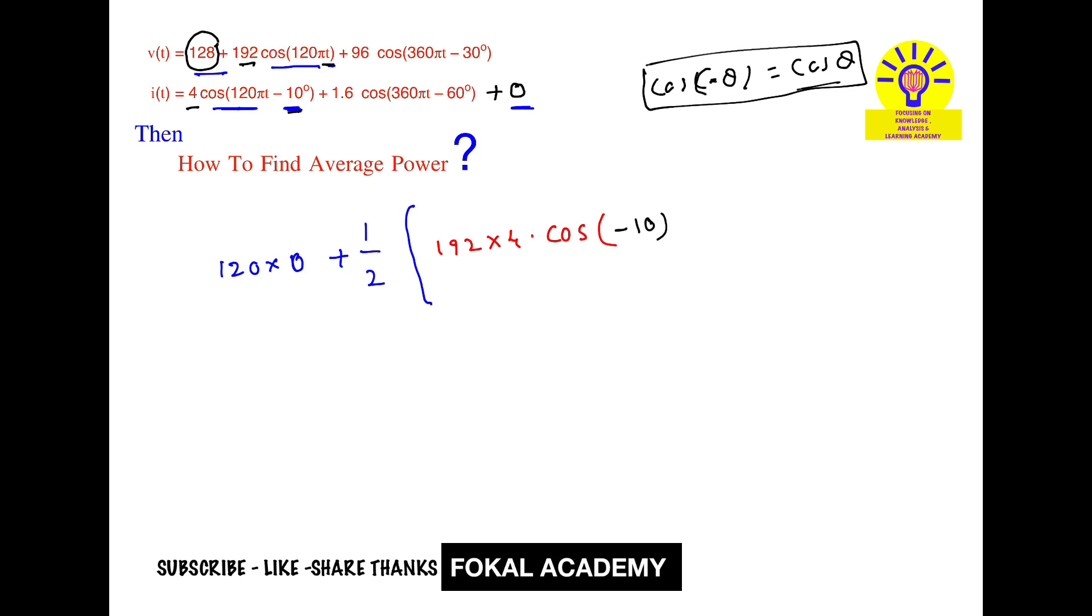Now, plus, next here, same thing for these signals, so product the amplitudes, that is 96 into 1.6 into cos of the difference in the phases, minus 30, minus 60 is there, the difference is 30.